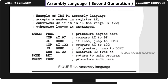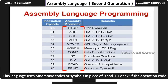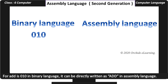Assembly Language — Second Generation. This language uses mnemonic codes or symbols in place of zero and one. For example, if the operation code for ADD is 010 in binary language, it can be directly written as ADD in assembly language, because assembly language uses symbolic code.